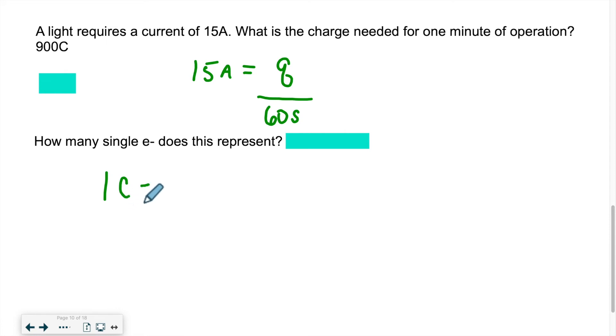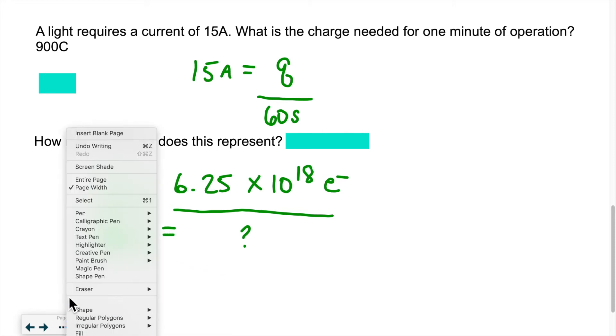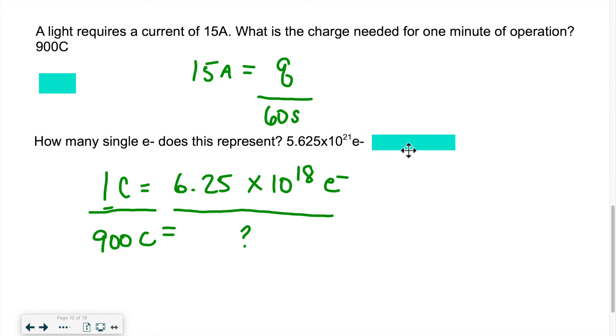In one Coulomb, I know that there is 6.25 times 10 to the 18 electrons. So knowing this, if I have 900 Coulomb, how many electrons do I have? I can actually cross multiply. I can do a ratio. So 6.25 times 10 to the 18 times 900 divided by 1 will give me the number of electrons contained in 900 Coulomb. That would be 5.625 times 10 to the 21 electrons. That's the amount of electrons contained in 900 Coulomb of charges. Those are typical simple questions you could get about current.